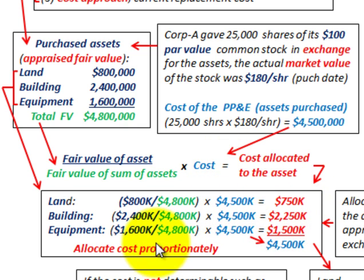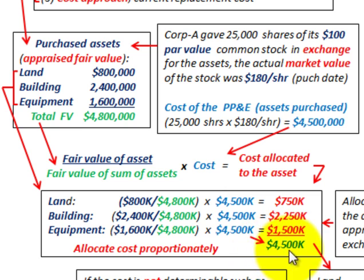We've allocated all these costs proportionately, and the total allocated cost is $4,500,000 — that's the price we paid for these assets.